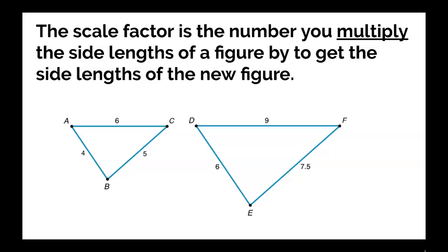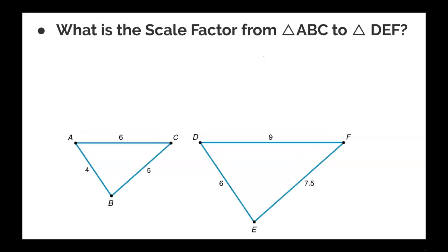So, a natural question that you would ask yourself is what is the scale factor from triangle ABC to triangle DEF? So, in other words, what are we going to multiply those side lengths in triangle ABC by to get the corresponding side lengths in triangle DEF?